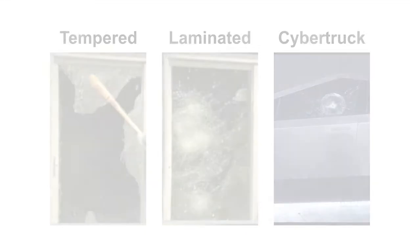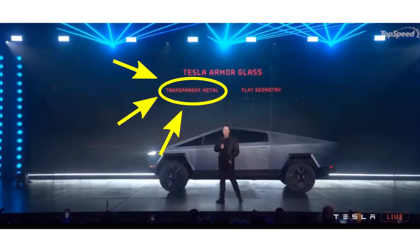Although Tesla hasn't released any info on the type of glass they're using, Mr. Musk does say at one point in the show that the glass is a transparent metal glass. This name is a bit of a marketing ploy.